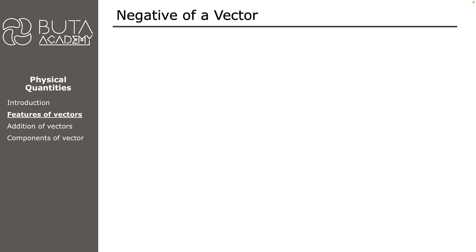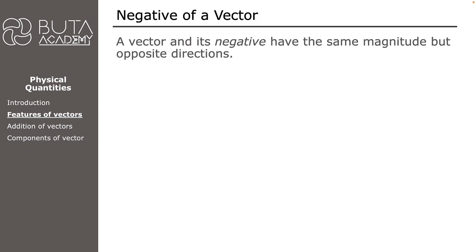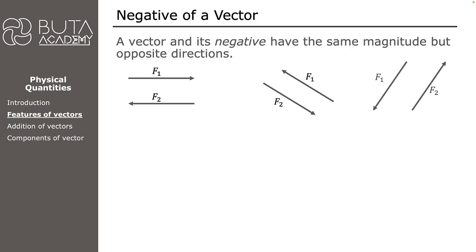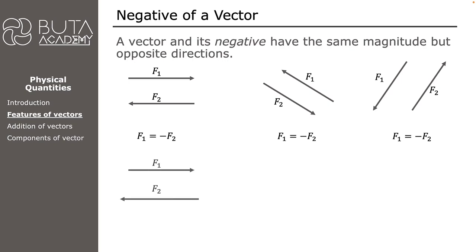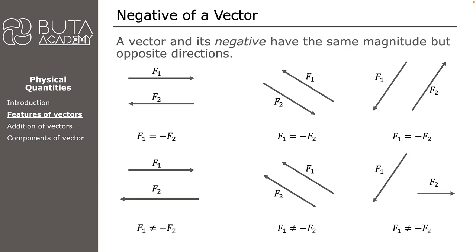A vector is the negative of another one if they have exactly the same magnitude but are opposite in direction. This is the case for each vector pair shown. In contrast, in the first non-opposite example the directions are opposite but the magnitudes are different. In the second the magnitudes are the same but the directions are also the same. In the third the magnitudes are different and the directions are not opposite to each other. As a result, none of these vector pairs are negatives of each other.